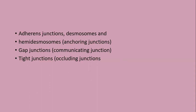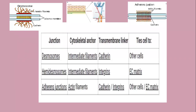Basically in vertebrates, cell junctions are of three types. The first is adherence junctions, among which desmosomes, hemidesmosomes, and adherence junctions are called anchoring junctions. Next there are communicating junctions or gap junctions, and the third type is occluding junctions or tight junctions.